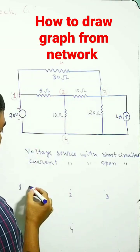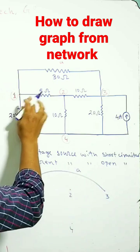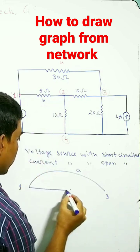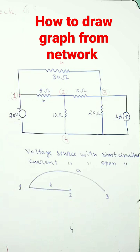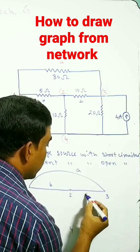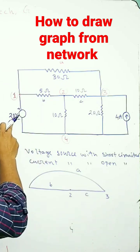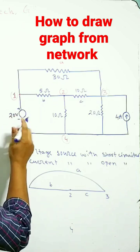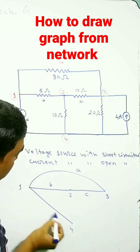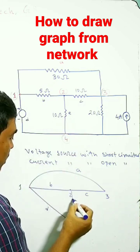This is branch A, and this is another branch B. This is branch C, and this voltage source is short-circuited. This branch is D.